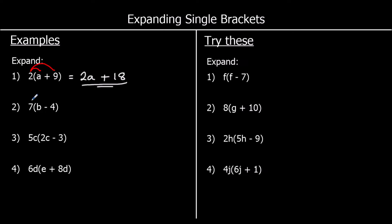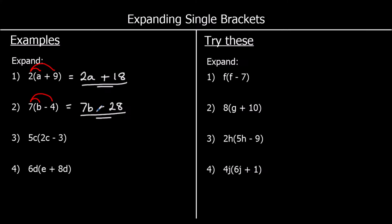For the second one we've got 7 times b and 7 times a negative 4. 7 times b we write as 7b. And 7 times a negative 4 is going to be negative 28. So we write 7b minus 28.